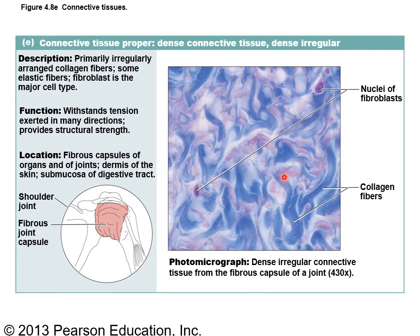Dense irregular connective tissue looks swirly because the collagen fibers go in multiple directions. It's found in joint capsules, but importantly it is found in the dermis of the skin — which leads right into what we'll talk about in the next chapter on skin.